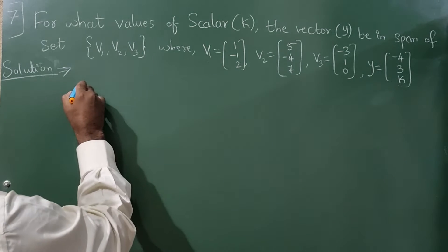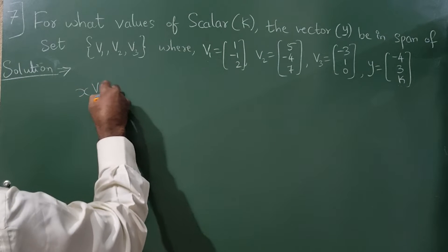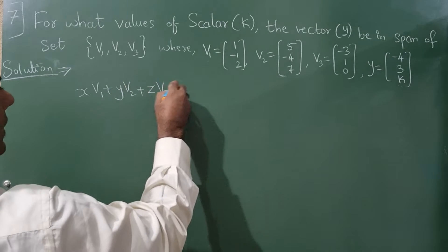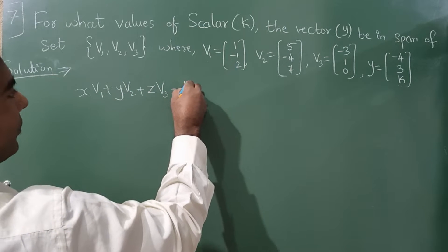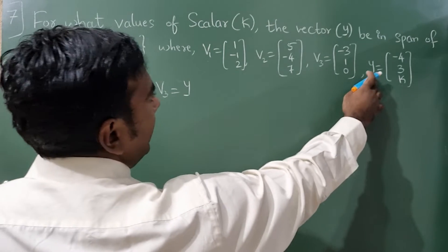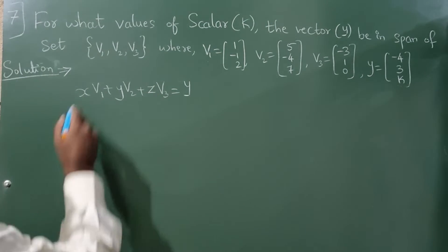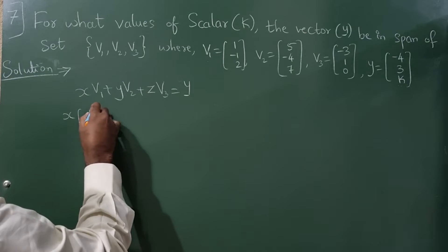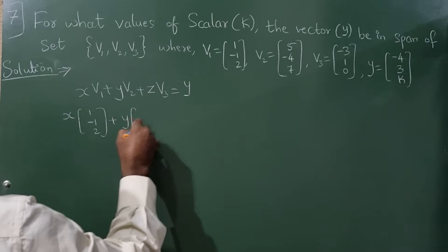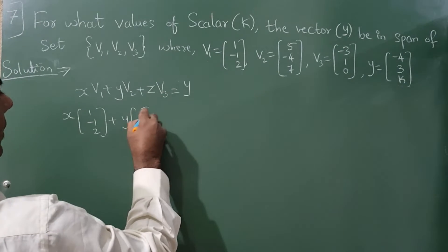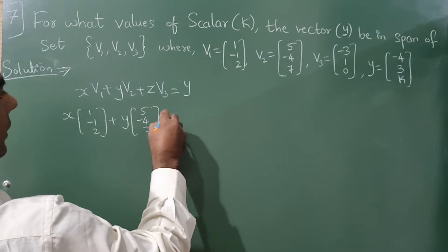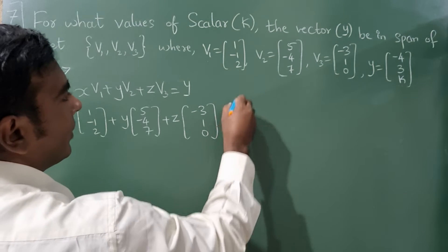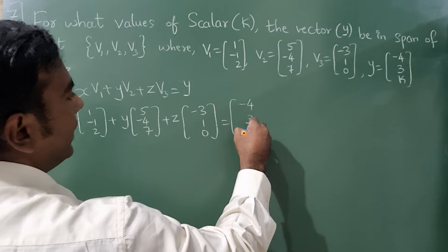So let x*v1 plus y*v2 plus z*v3 is equal to this vector y. Now I'll write here: x, what is v1? 1, minus 1, 2. Y, v2 value is 5, minus 4, 7. Z, v3 value is minus 3, 1, 0. And minus 4, 3, k.